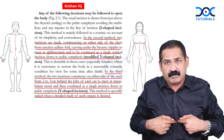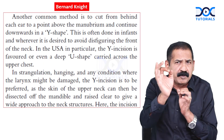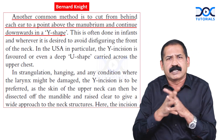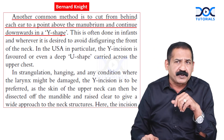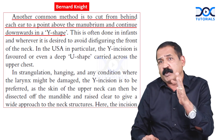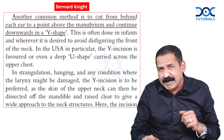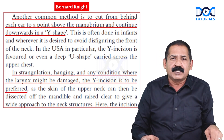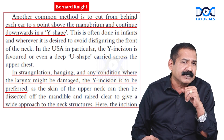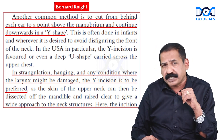At the same time, the modified Y-shaped is as I described just now. Coming to the international and most reputed author Bernard Knight, what he says: 'Another common method is to cut from behind each ear to a point above the manubrium and continue downwards in a Y-shape.' So in strangulation, hanging, and any condition where the larynx might be damaged, the Y-incision is to be preferred.